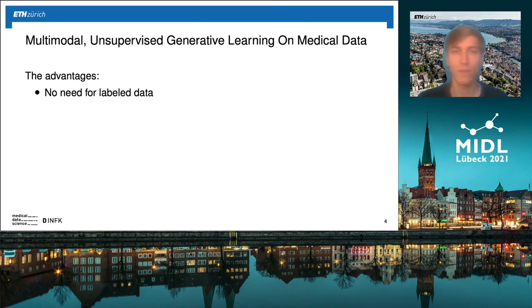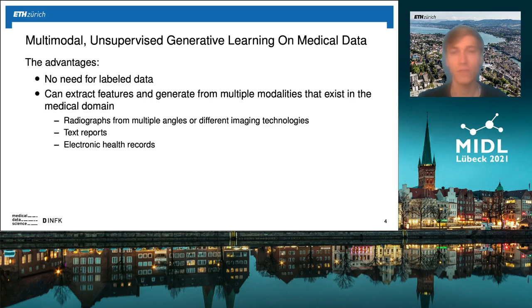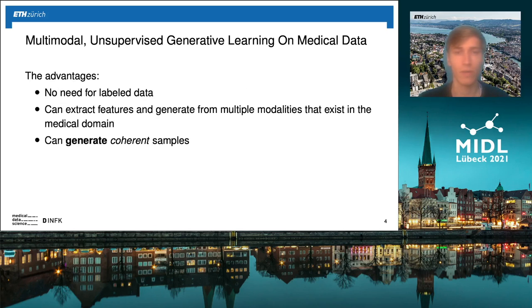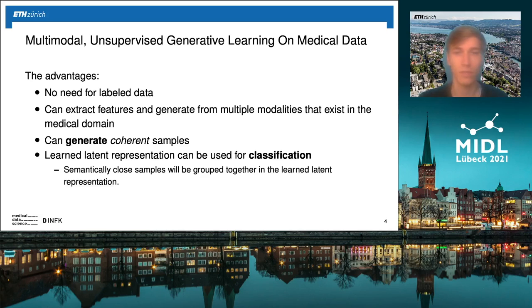So what are the advantages? First of all, it doesn't need any labeled data, which is important in the medical domain especially since experts are needed to label data. One can also extract features and generate from multiple modalities that exist in the medical domain, such as radiographs from multiple angles, different imaging technologies, text reports, or electronic health records. We can also generate coherent samples — meaning that if one conditions the generation with an image of a patient who has a certain pathology, the generated samples will also describe that pathology. Finally, one can use this latent representation for classification, because semantically close samples will be grouped together in the learned latent space.